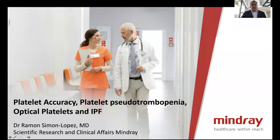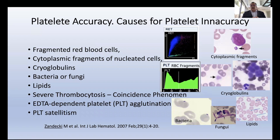Platelet accuracy and causes of platelet inaccuracy: one of the more common causes is fragmented red blood cells that can interfere with platelet counting. As you can see here in the center, there is a histogram of a case with fragments where the red cells enter the area of platelets, and we don't know if these are really red cells or platelets.